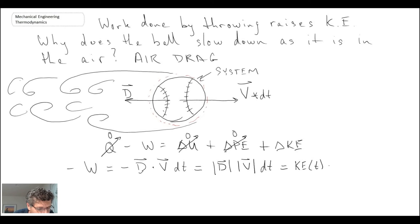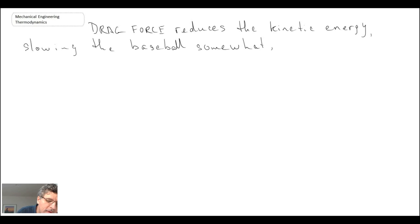This is then equal to the change in kinetic energy, which we can express as kinetic energy at t minus kinetic energy at a later time t plus dt. That's what's going on with our process. We basically have the drag force and it is what is slowing down the baseball.